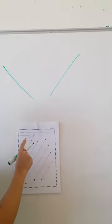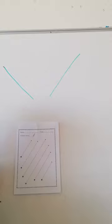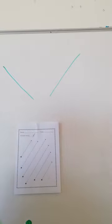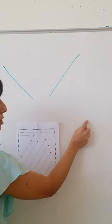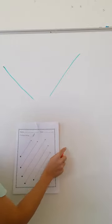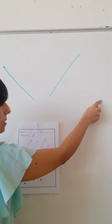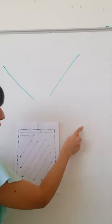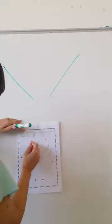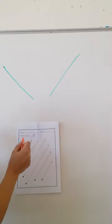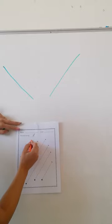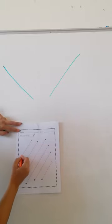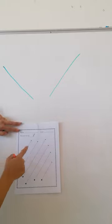On this worksheet we are going to trace the diagonal lines. This line starts from the top right to the bottom. To trace the lines on the worksheet, we have to start on the arrow and go down. This is a diagonal line.